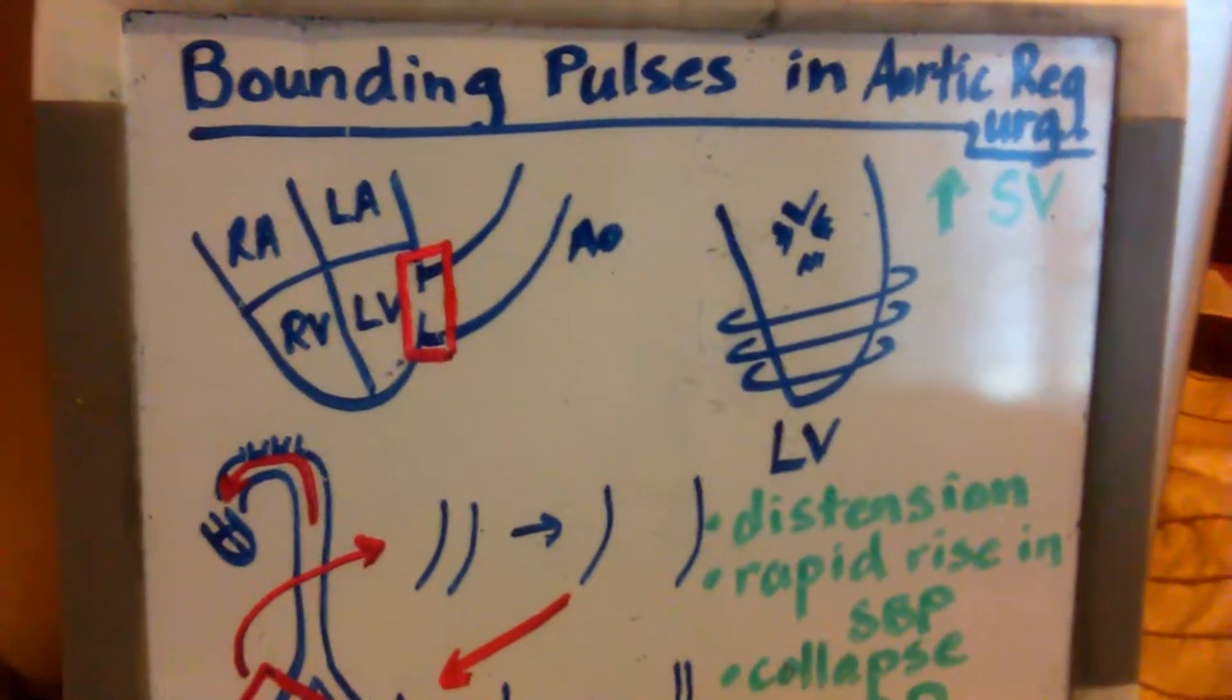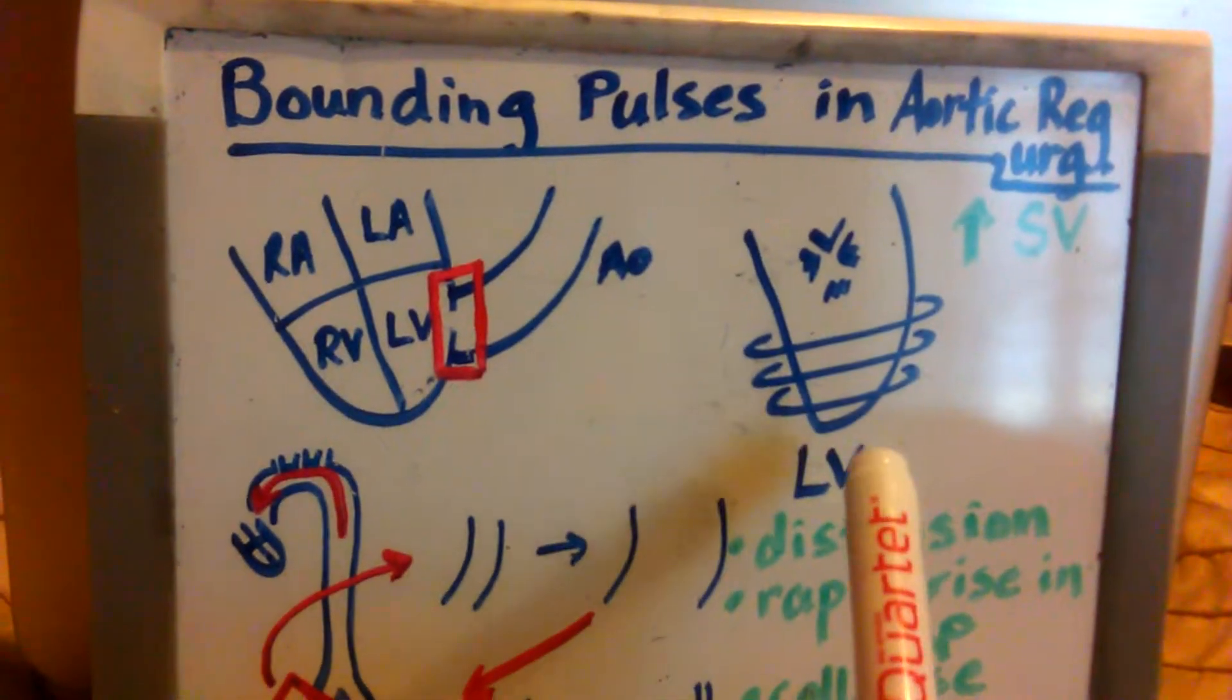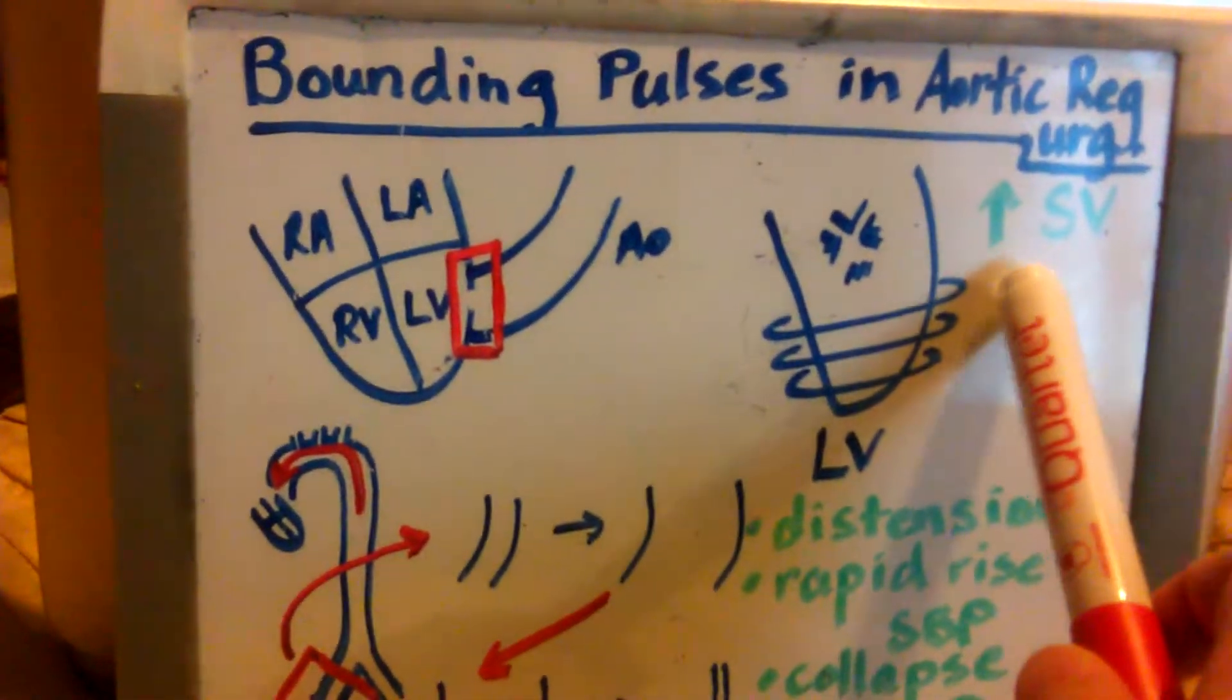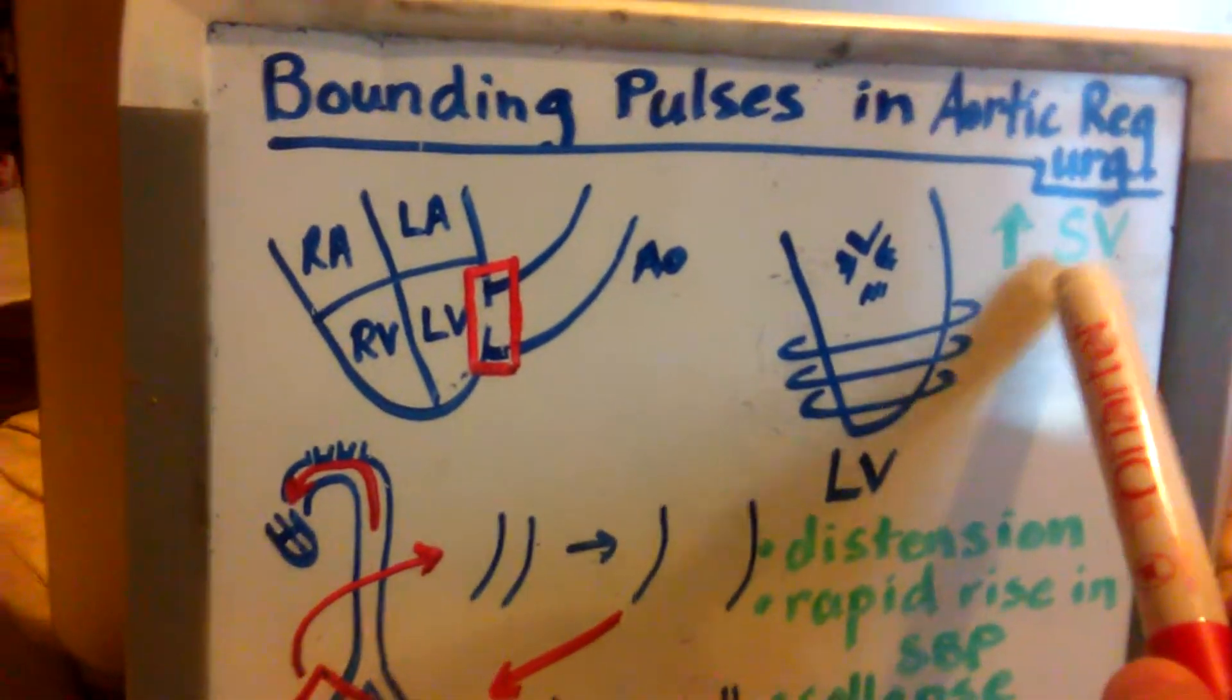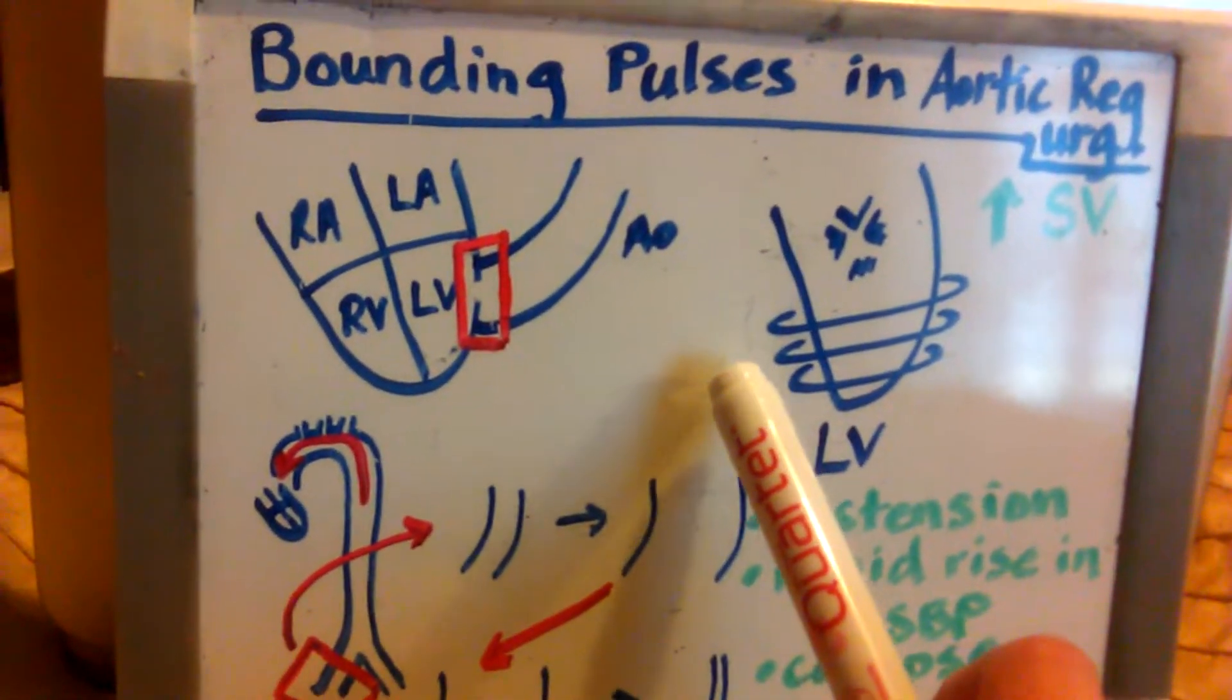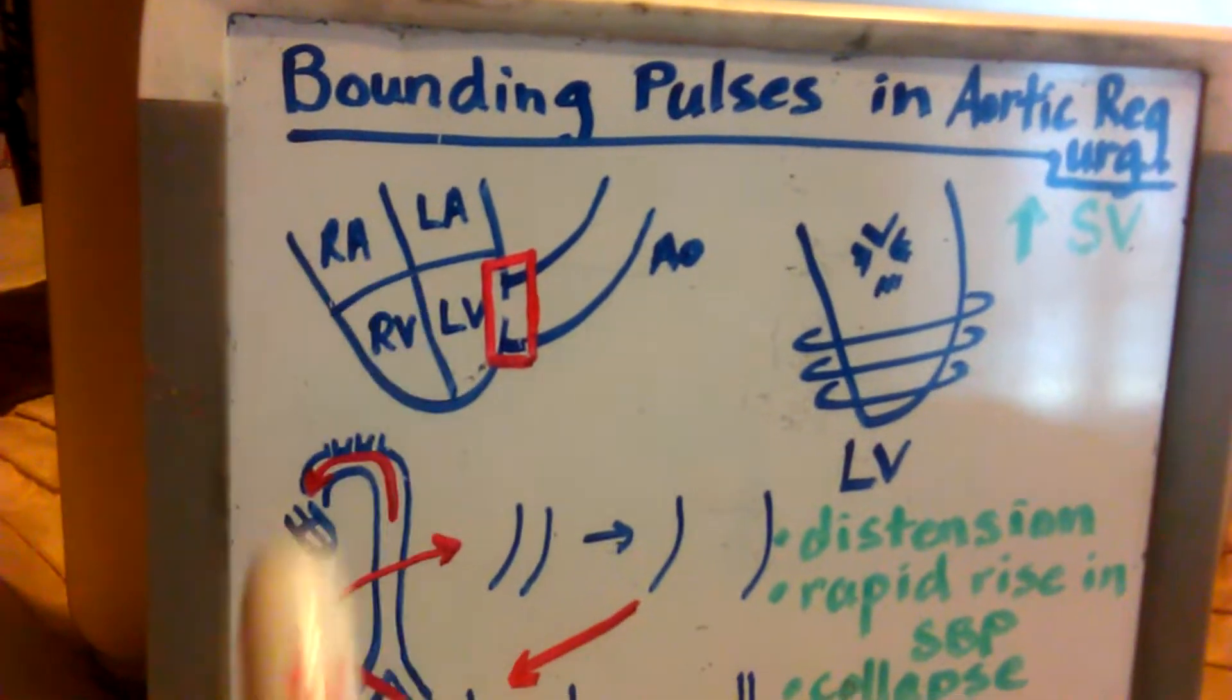What the body does, what the heart does to try and compensate for this is during systole, the left ventricle will actually contract harder, increasing your stroke volume. And so, it will try really hard to contract so that it can get the blood all the way where it needs to go before it can come back into the left ventricle.